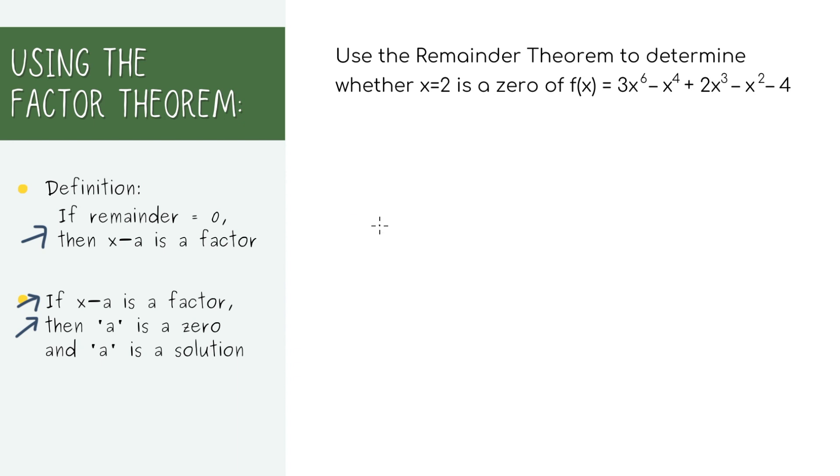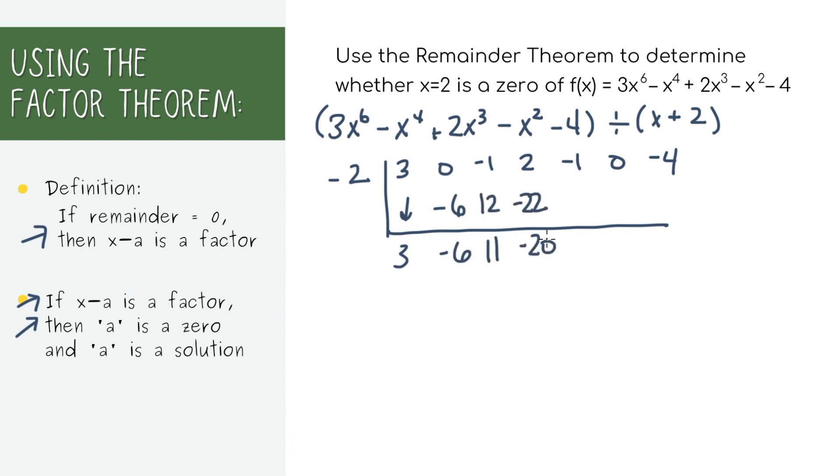We can actually use the same method as our last problem and divide this polynomial by x minus 2. If the remainder ends up being zero, then it is a factor. If the remainder is not equal to zero, then it's not a factor. For this specific problem, the remainder is not equal to zero. So you know that x minus 2 is not a factor. And therefore, x equals 2 is not a zero.